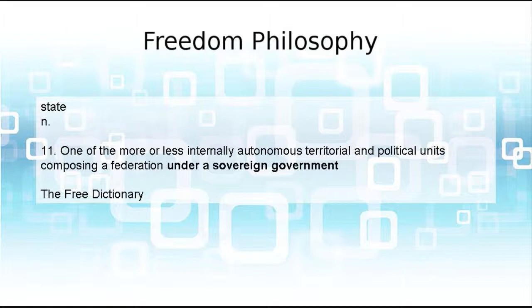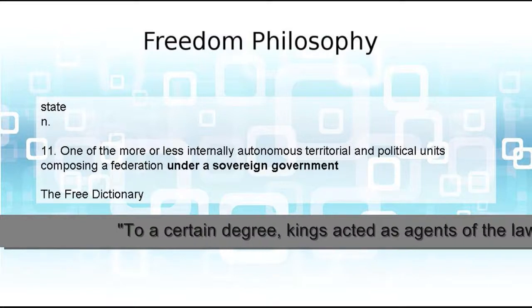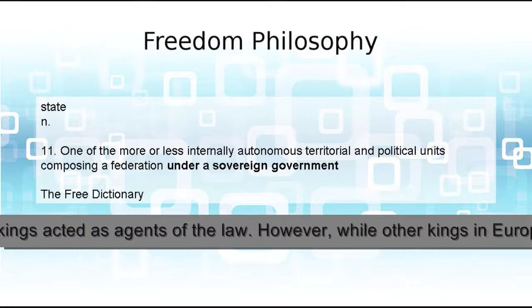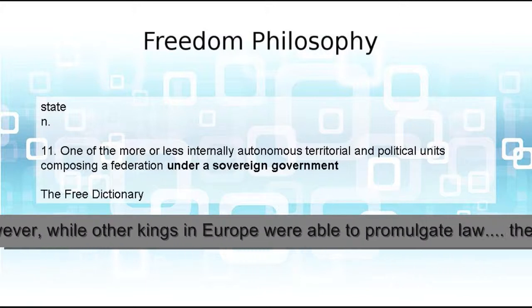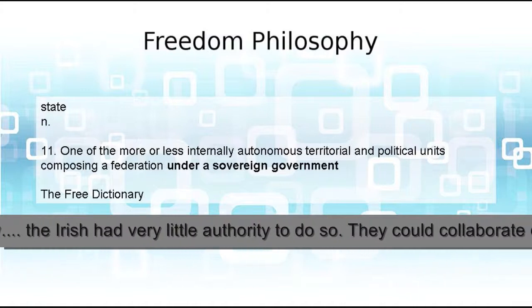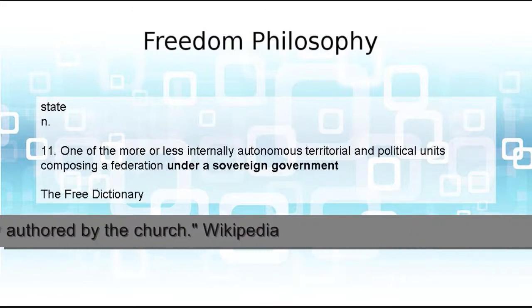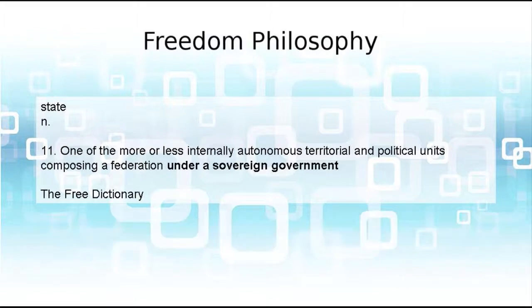A semantic and conceptual trap occurs when historians in statist societies attempt to describe stateless societies. For example, they may use the term 'king' to refer to certain civic positions in a stateless society, this being the nearest conceptual match. An unfortunate consequence is that all the conceptual baggage of statism gets carried along and projected onto the stateless society. Please keep this in mind as we move on to the next slide, where I think things will become a lot clearer.